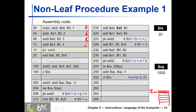Then we jump-and-link to add4. Since we use jump-and-link, the return address 20 is stored in RA — that is very important. Inside add4, at address 200, the first step is to decrease the stack pointer by four, so SP becomes 9996. We then store RA (which contains 20, the return address back to main) into that stack location, so that location now contains 20.